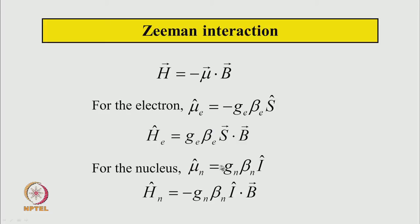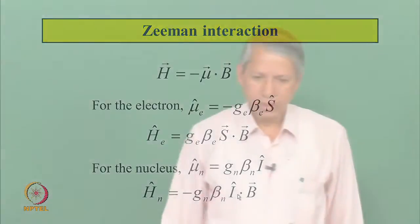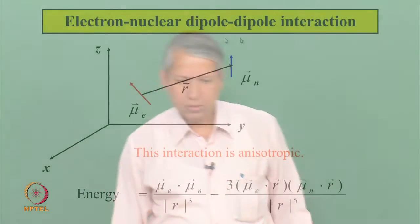Similarly, for the nucleus the magnetic moment gives the nuclear Zeeman interaction, which is G_N β_N I·B. In addition, there is another interaction: the magnetic dipole-dipole interaction. There is one magnetic dipole from the proton and another from the electron, and these two magnetic dipoles can interact, as shown here.